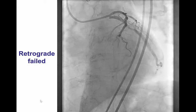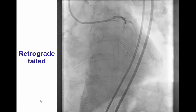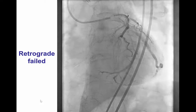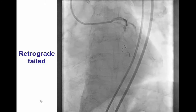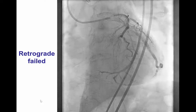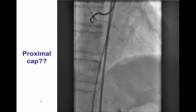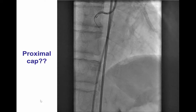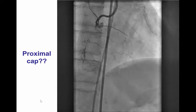Given the long length of occlusion, the ambiguous proximal cap, and the presence of good collaterals, the first attempt was a primary retrograde approach. However, despite several attempts to wire through the septal collateral, we were unable to do so, and as a result we switched back to an antegrade approach. We did multiple angiographic projections in an attempt to clarify the ambiguity of the proximal cap.